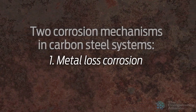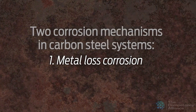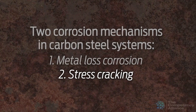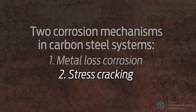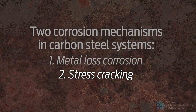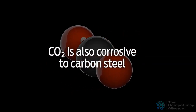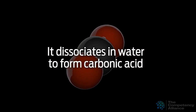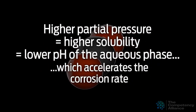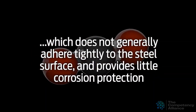Here are two corrosion mechanisms in carbon steel systems. The first is metal loss corrosion: H2S dissociates in water to form a weak acid, and the corrosion product is iron sulfide, which adheres tightly to the steel surface and often inhibits further corrosion. The second is stress cracking, which is generally more important — it is difficult to detect and can lead to sudden failures. Systems designated SOUR in NACE MR0175 or ISO 15156 are considered susceptible to stress cracking failure and require selection and use of certain steels and welding procedures. CO2 is also corrosive to carbon steel; it dissociates in water to form carbonic acid. The higher the partial pressure of CO2, the higher its solubility and the lower the pH of the aqueous phase, which accelerates the corrosion rate. The corrosion product is iron carbonate, which does not generally adhere tightly to the steel surface and provides little corrosion protection.